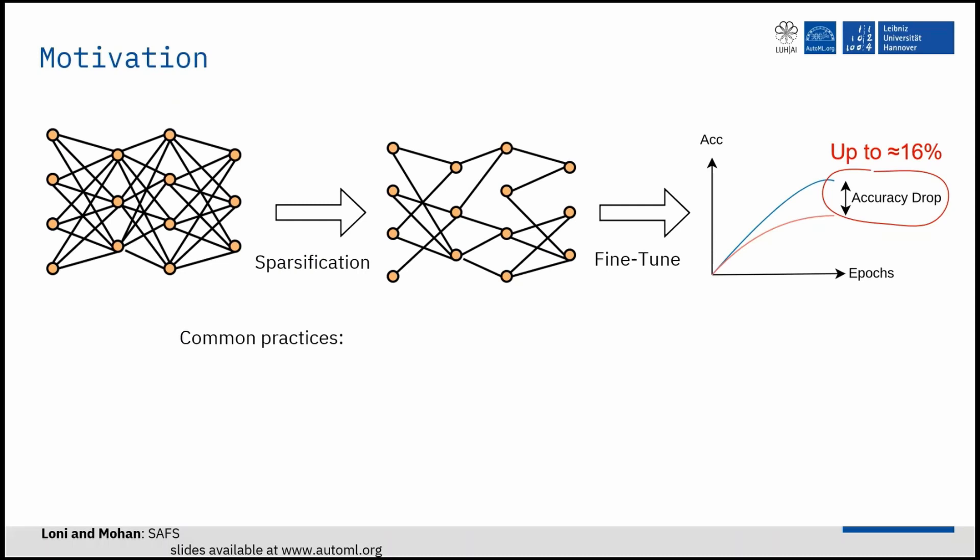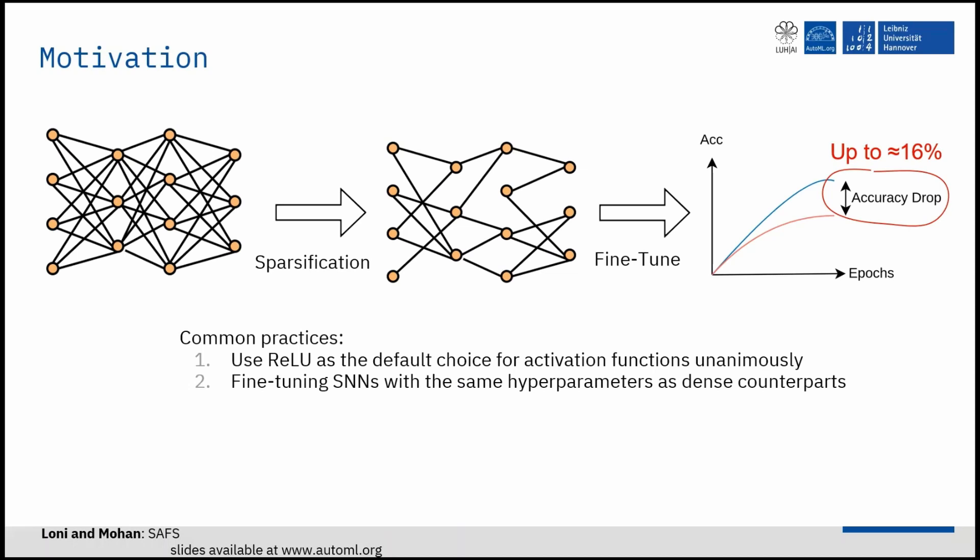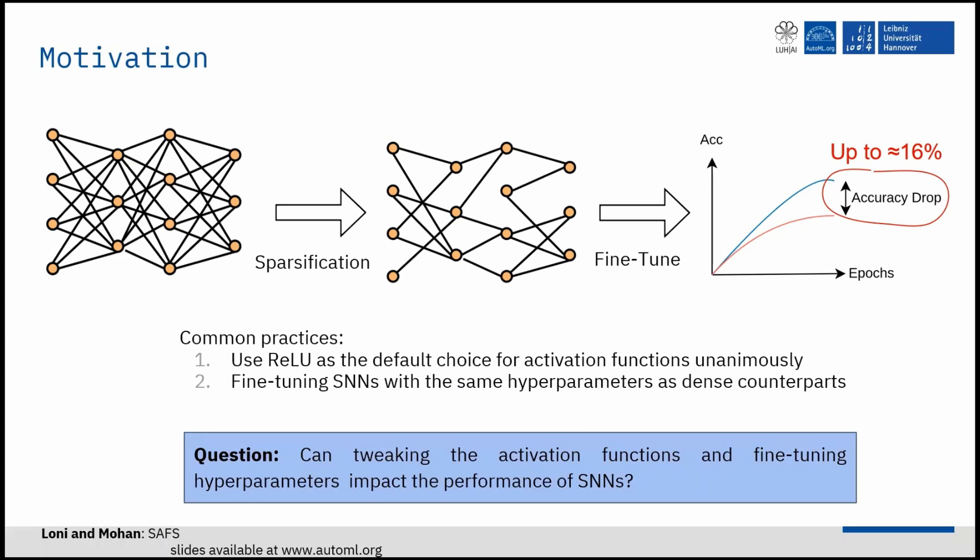We assume two unseen important factors are involved. First, using ReLU as the default choice for activation functions of the sparse networks. Second, fine-tuning sparse neural networks with the same hyperparameters as dense networks is not reliable in the sparse context.